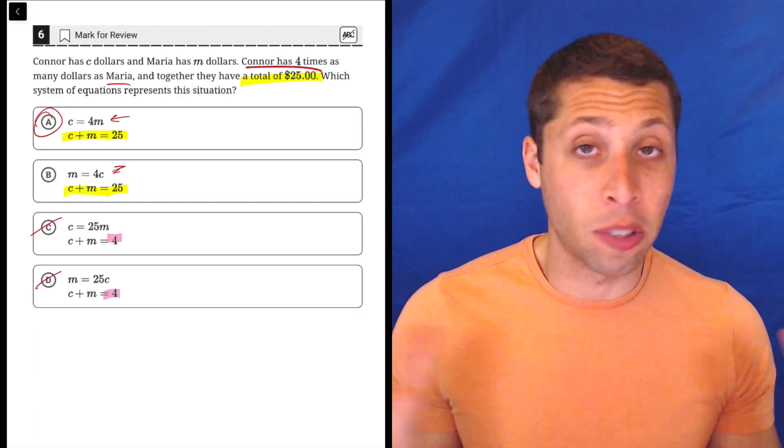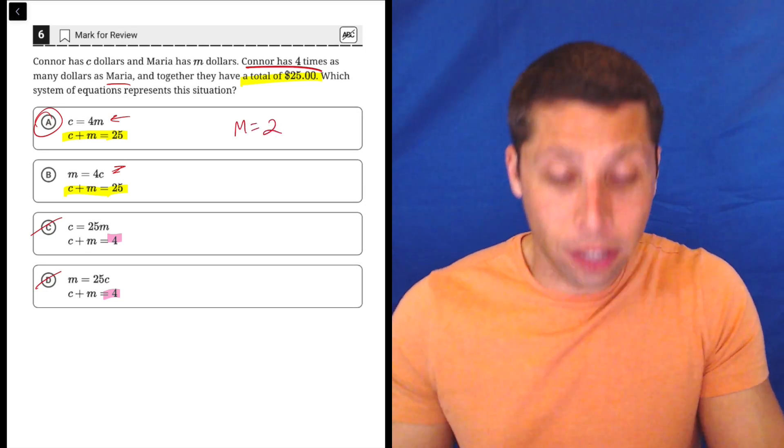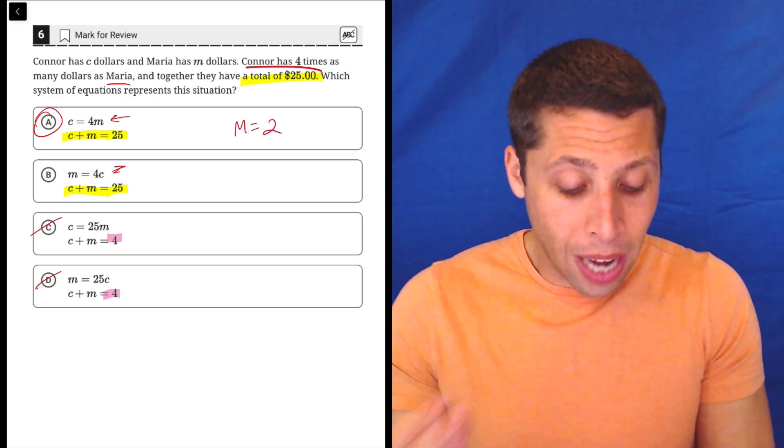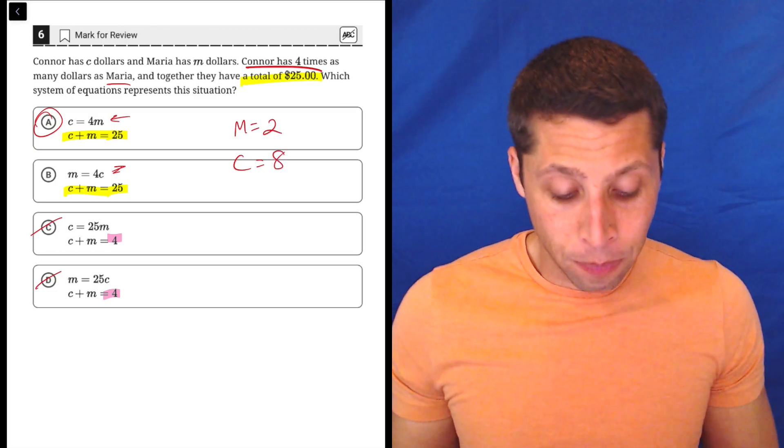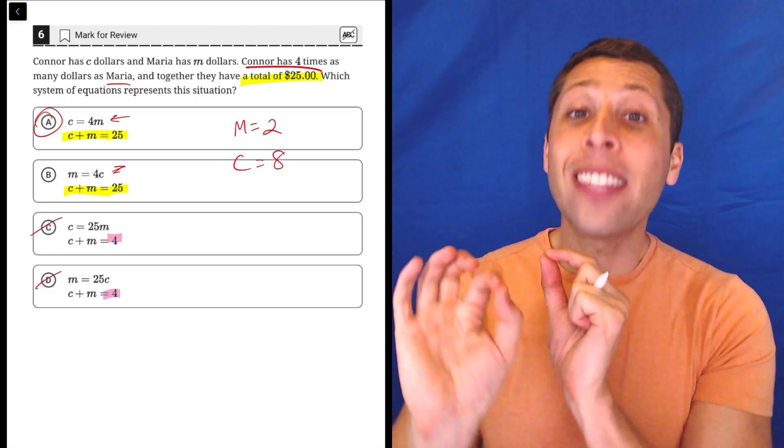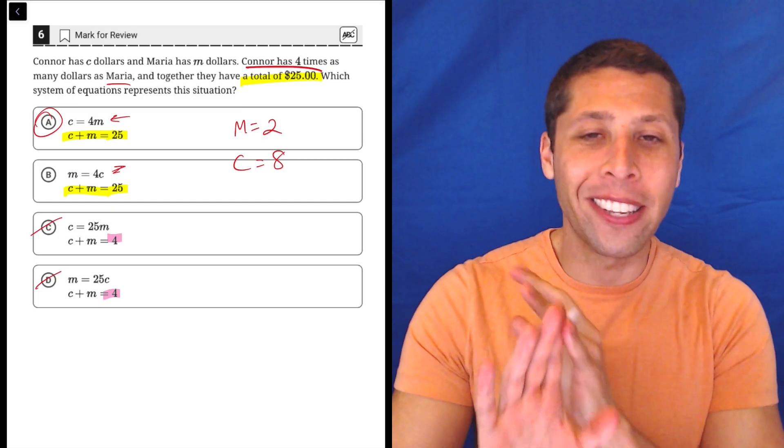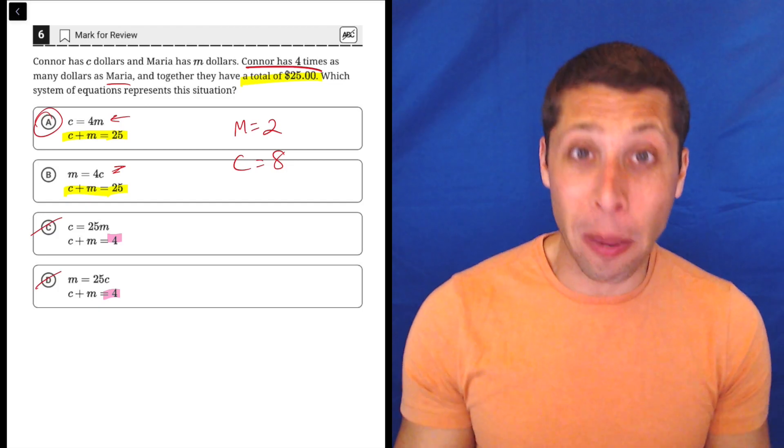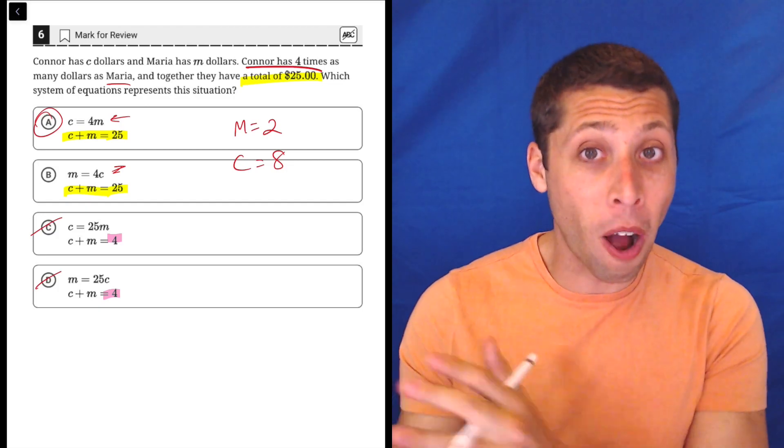We're just going to read that first part. Connor has four times as many dollars as Maria. So let's just pretend that Maria has $2. Okay. So if Connor has four times as many, well, four times two is eight. So those numbers make sense with at least that part of the story. They don't make sense with the other part of the 25. That's okay though. That doesn't bother me. I'm not interested in that part. I figured that part out. I'm just interested for a second in making sure I put the 4 on the right variable.